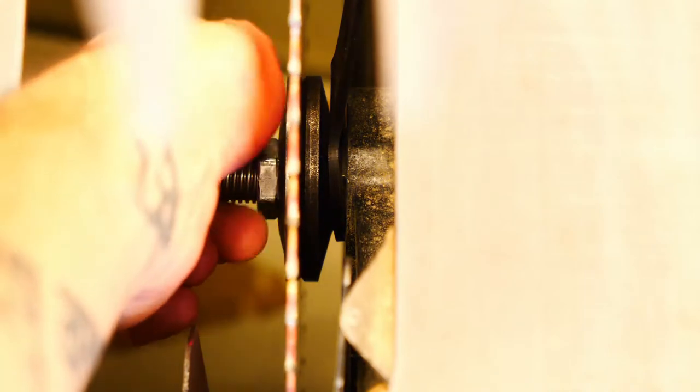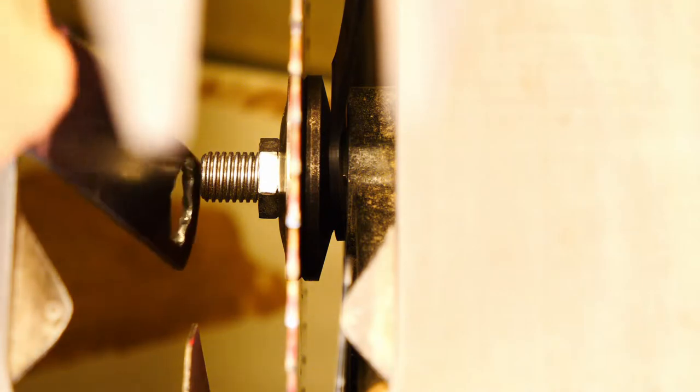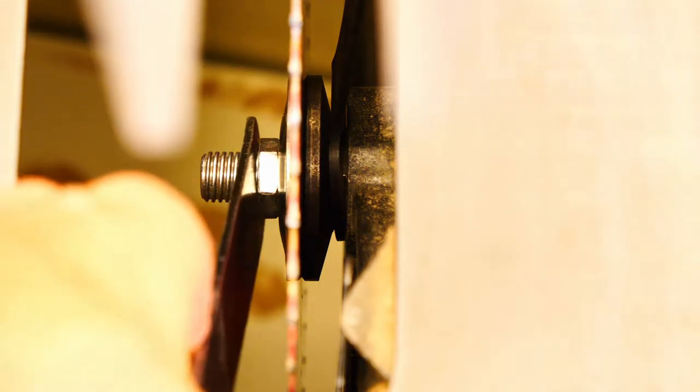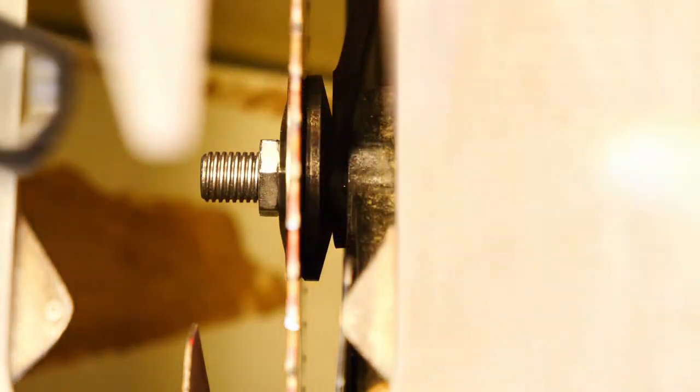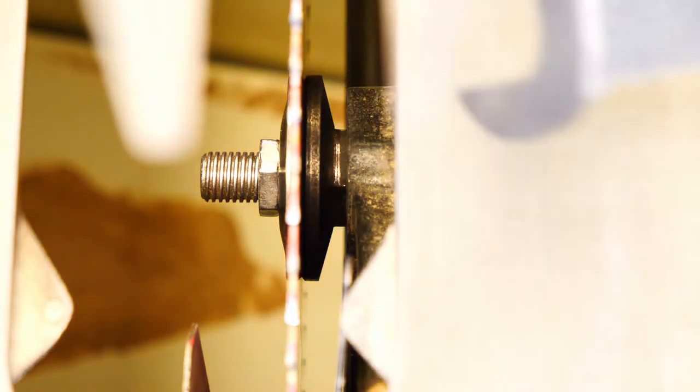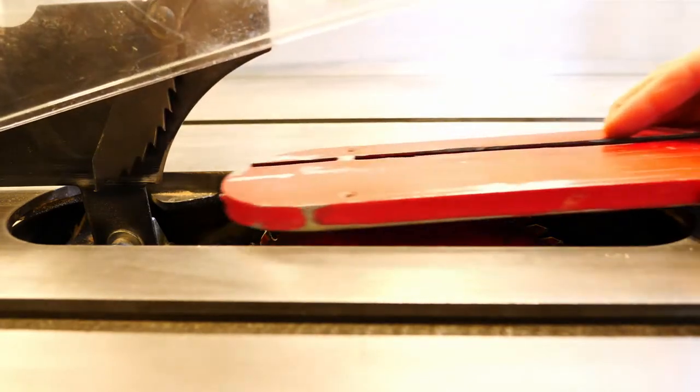So not righty tighty lefty loosey. It's righty loosey lefty tighty. We'll grab our wrench, place it on the nut, and then give it a little bit of a tighten. Not too much, just enough to snug it up. You don't need to over-tighten it as it will make it really hard to remove the blade. We'll go ahead and replace our red blade cover back onto the table.